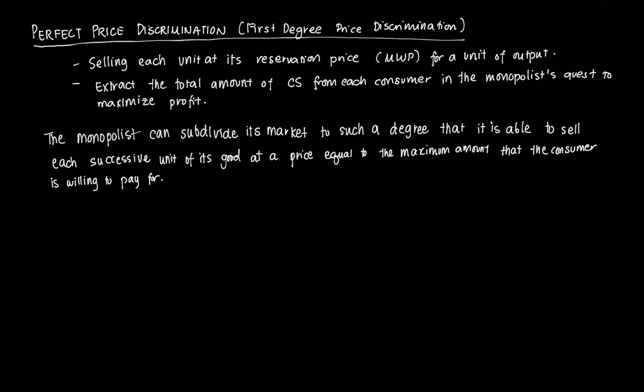Hi everyone and welcome to this video on perfect price discrimination, which is the very first type of price discrimination we'll discuss through this course. Perfect price discrimination, commonly referred to as first degree price discrimination, essentially involves a monopolist selling each unit of a good at the consumer's reservation price, or the maximum willingness to pay of the consumer for a particular unit of output.